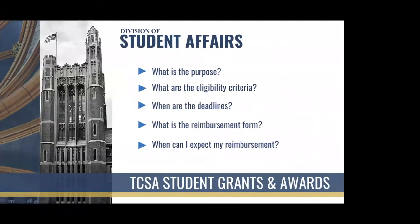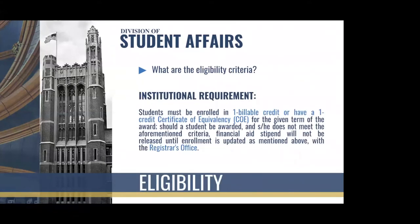Today we're going to cover the different grants, awards, and fellowship opportunities offered by student life, specifically discussing the purpose, eligibility criteria, deadlines, a reimbursement form, when you can expect your reimbursement, and for some, the review process for all grants and awards. To begin, the institutional eligibility requirement states that students must be enrolled in one billable credit, or have a one-credit Certificate of Equivalency (COE), for the given term of the award in order for the stipend to be released. Should you be awarded and not meet this criteria, we cannot release the stipend until enrollment is updated with the Office of the Registrar.